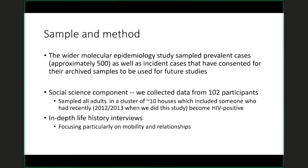The broader molecular epi study sampled approximately 500 prevalence cases as well as the new incident cases, where people had consented for their archived samples to be used for future studies. The social science component drew a cluster of about 10 houses that included someone who'd recently become HIV positive. We ended up with in-depth life history interviews with 102 participants. A number of adults we could not reach, but we did very well in terms of the number of people from those houses we were able to talk to.